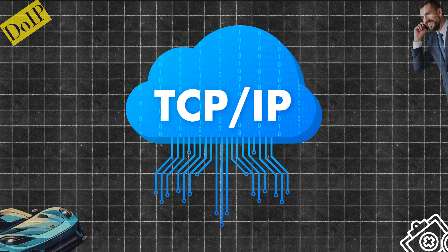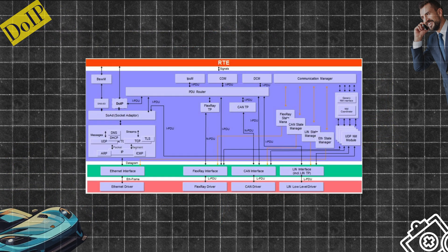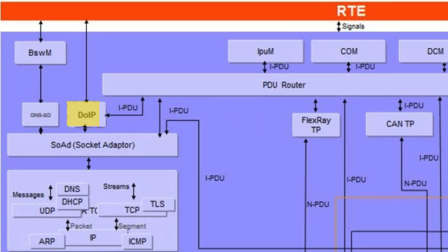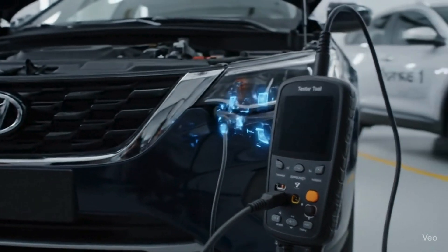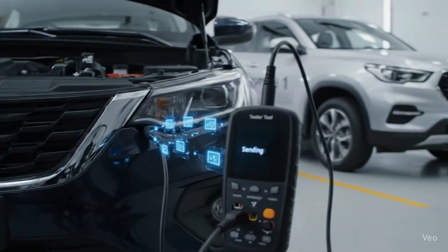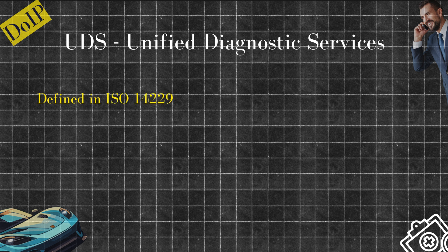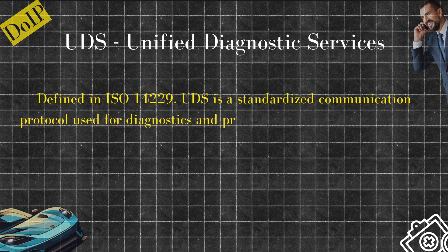DOIP is a protocol based on TCP/IP. It's part of the Autosar stack. It enables diagnostic tools — like those used in service stations or OTA updates — to communicate with the ECU using IP addresses. In short, it's UDS over a high-speed network like Ethernet, instead of slow legacy CAN.